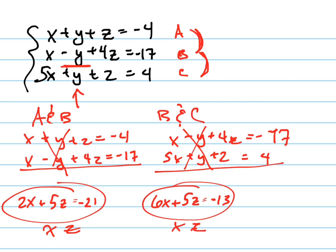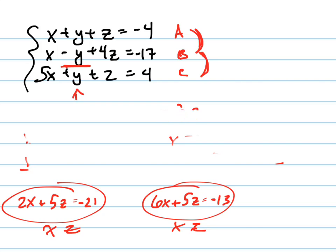So if I get those two equations now, I can take those two equations, I'm going to erase this, and I can put them together in a system of equations, and now I can solve for X and Z. So I'm going to write those together. 2X plus 5Z equals negative 21. 6X plus 5Z equals negative 13.